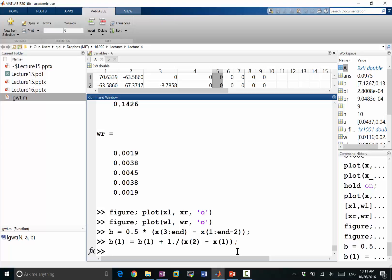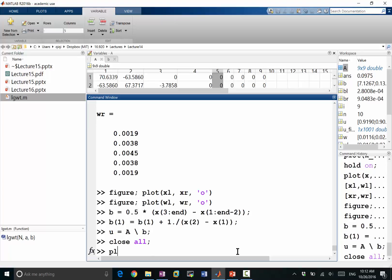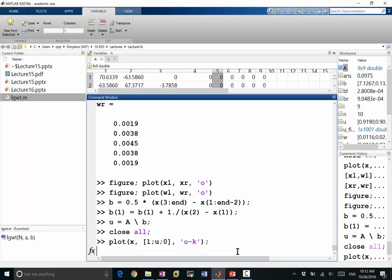So this is the additional term we have in the right-hand side due to the boundary condition. So now we have, the a is not changed, so we have u is equal to a backslash b. And now let's plot the solution, close all, plot x. Instead of 0 u1, we have 1 u0. Instead of 0 u0, we have 1 u0, because the left side is 1 now, right?